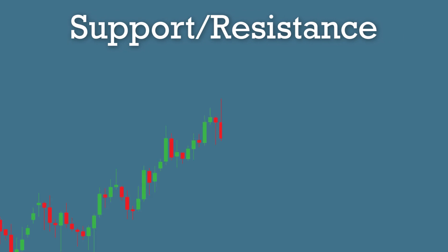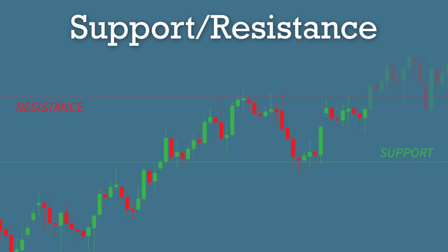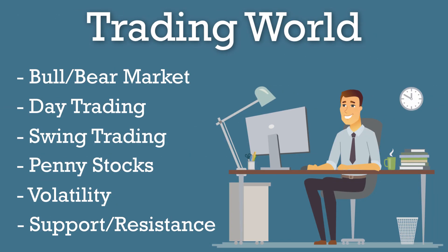Lastly, we have support and resistance. Support levels indicate a downward trend that cannot go past a certain price point because demand is strong. Resistance means that selling has been strong, so an increase in price is less likely. Both of these will help traders to identify where the trend is heading and whether it will stay that way or reverse.